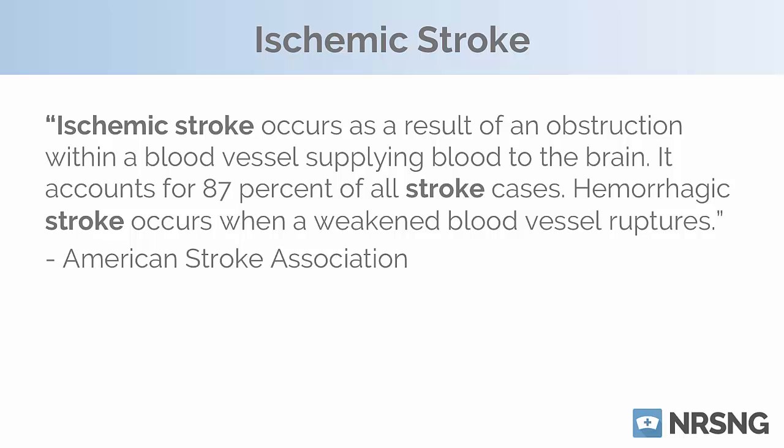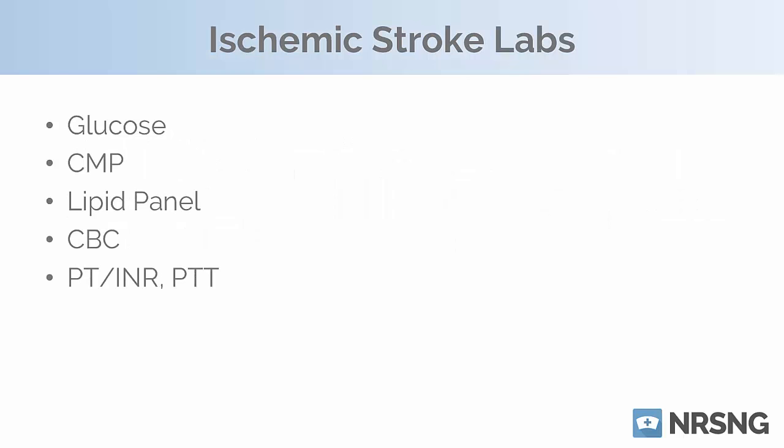The two types of strokes do get treated differently while they present the same. The only way you know the difference is by getting a CT or an MRI — we've got to initially figure out which kind of stroke it is so we know the appropriate way to treat it. The labs specific to ischemic stroke include a glucose, a CMP or BMP, a lipid panel, a CBC, and PT, INR, and PTT.